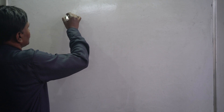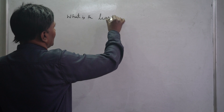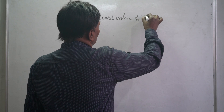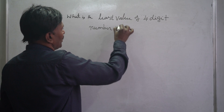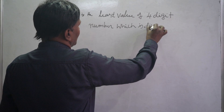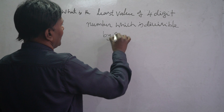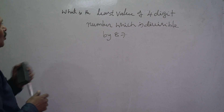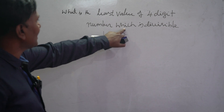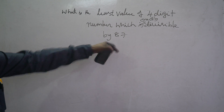Hi, this is Srinivar's. Today we will see one problem: what is the least value of a four-digit number which is exactly divisible by 87? See, such type of problems in the examination you may get at least one problem based on this type of question.